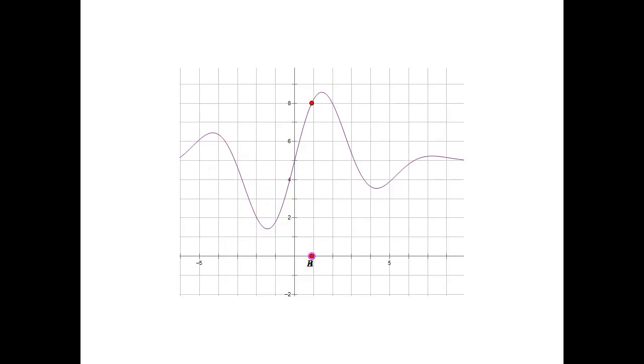I know why that is. It's because it takes two points to define a line, and we only have one point. Once the two points are coincident, there's only one point.